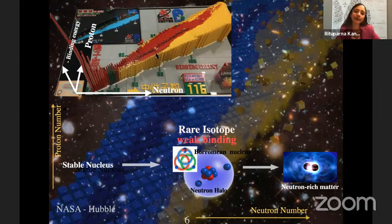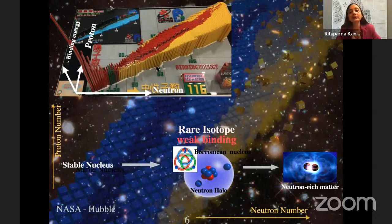The rare isotopes lie along the ridges, so if you put a ball on top of a ridge, it won't stay there — it will roll down towards the valley of stability. So rare isotopes are not stable; they are short-lived and decay towards the stable isotopes. Since they are not lying around us naturally, we have to produce them on Earth to study them.